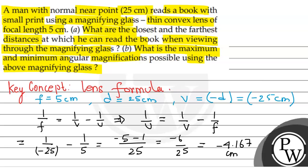Then, the closest object distance is U. Now, the closest distance at which the person can read the book is 4.167. This is our U. The closest distance at which the person can read the book is this value, 4.167 cm. Minus is our direction.